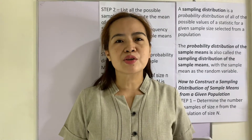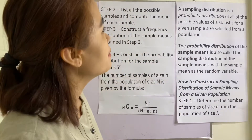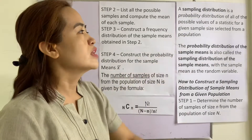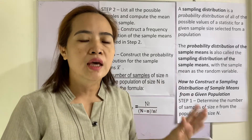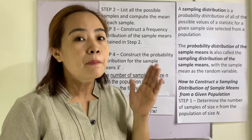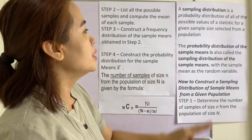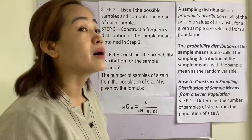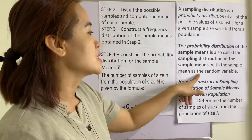Hello everyone, welcome to another session of Mami Teo teaches math. Our most essential learning competency for today is to identify the sampling distribution of statistics. A sampling distribution is a probability distribution of all the possible values of a statistic for a given sample size selected from a population. The probability distribution of the sample means is also called the sampling distribution of the sample means, with the sample mean as the random variable.